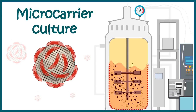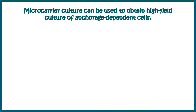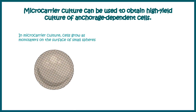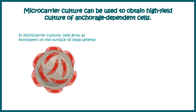Hello and welcome to this video where we are going to talk about micro carrier cultures and their importance from an industrial point of view. Micro carrier cultures can be used to obtain high yield culture of anchorage dependent cells. In micro carrier culture, the cells grow in monolayers on top of sphere-like structures known as micro carrier beads. This is a typical micro carrier bead surrounding which animal cells, which are anchorage dependent, can grow and proliferate.